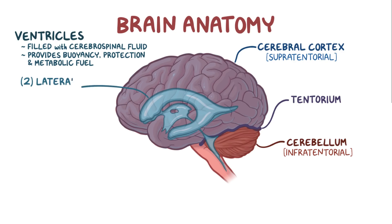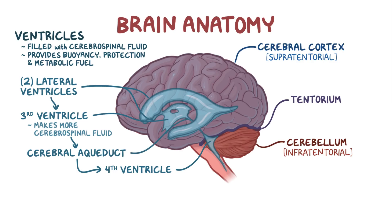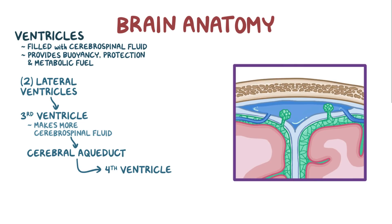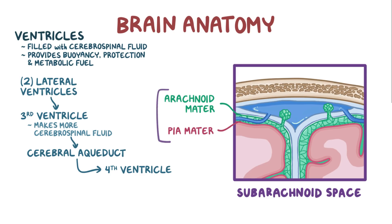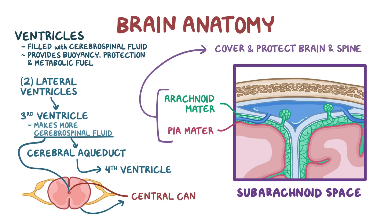Highest up are two C-shaped lateral ventricles that lie deep in each cerebral hemisphere. The two lateral ventricles drain their cerebrospinal fluid into the third ventricle, which is a narrow funnel-shaped cavity at the center of the brain. The third ventricle sends all of it to the fourth ventricle via the cerebral aqueduct. The fourth ventricle is a tent-shaped cavity located between the brainstem and the cerebellum. After the fourth ventricle, the cerebrospinal fluid enters the subarachnoid space — the space between the arachnoid and pia mater, two of the inner linings of the meninges, making it possible for cerebrospinal fluid to also flow through the central canal of the spine.